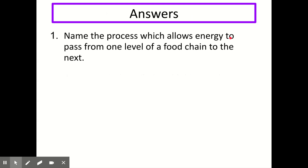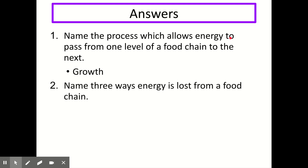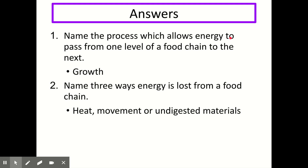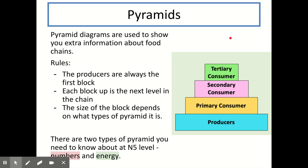Question one asks you to name the process which allows energy to pass from one level of a food chain to the next — and that is growth. Question two asks you to name three ways energy is lost from a food chain — and that is heat, movement, or undigested materials.